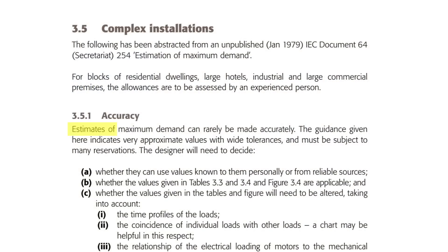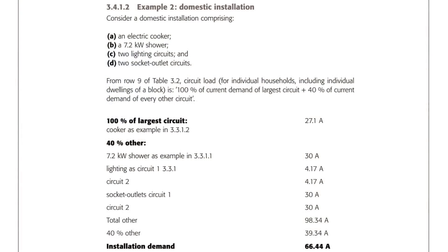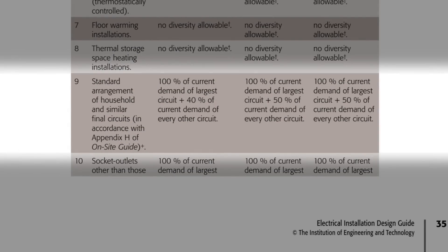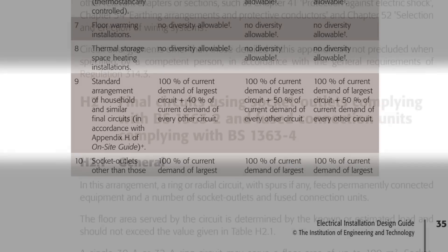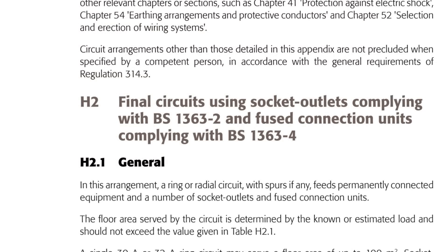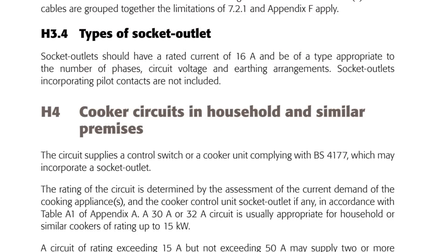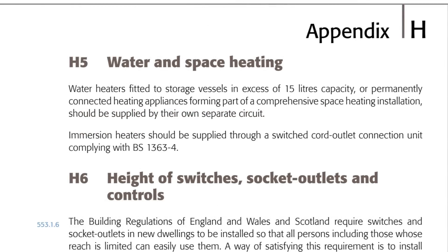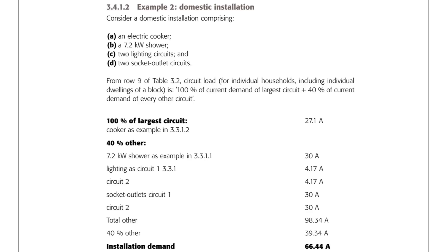In short, maximum demand is tricky. The Design Guide itself acknowledges when discussing complex installations that estimates of maximum demand can rarely be made accurately - and we've seen in this example that this is true even for simple installations. However the Design Guide does show us one other option in example 3.4.1.2, which gives the example of a simple installation and instead of breaking the circuits down line by line from Table 3.2, it simply uses line 9 of that table to perform the calculation.